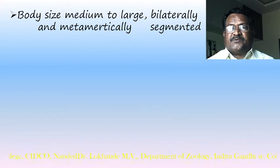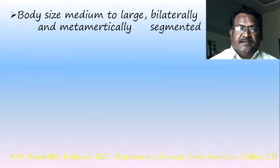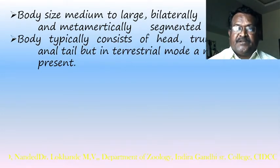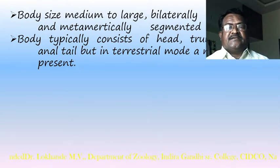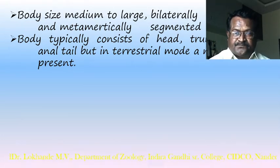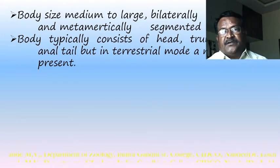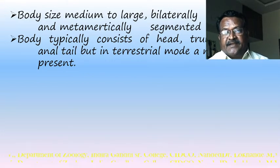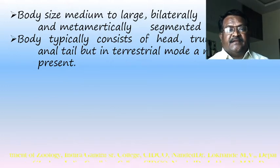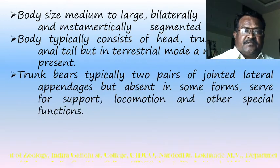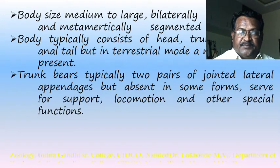All vertebrates are bilaterally symmetrical and metamerically segmented animals. The body typically consists of head, trunk, and a post-anal tail. In terrestrial forms a neck may also be present, giving four body divisions: head, neck, trunk, and tail.